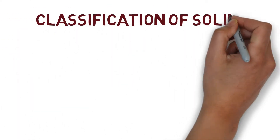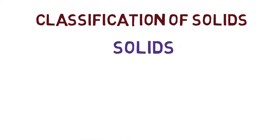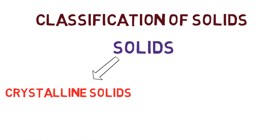Now let us discuss the classification of solids. Solids are classified into two types: the first one is crystalline solids, and the second one is amorphous solids.